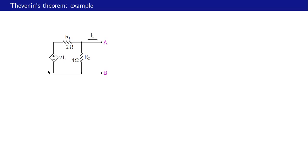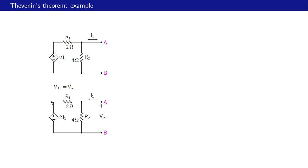Here is another example. It has a dependent source but no independent current or voltage sources, and we want to obtain the Thevenin equivalent for this circuit as seen from A-B. The dependent source is a voltage source, and the voltage difference between these two nodes is two times I1, where I1 is this current. So this voltage is controlled by a current and therefore it is a current-controlled voltage source. Let us find the Thevenin voltage first, which is the same as Voc.